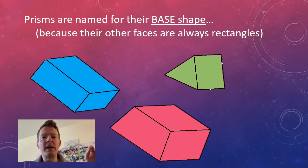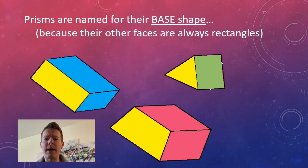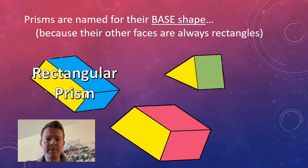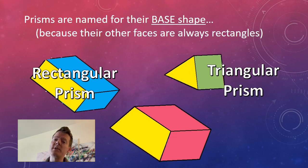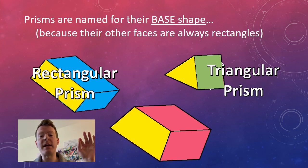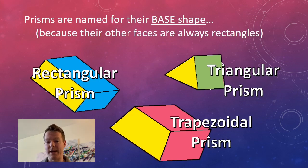Here are our three prisms, and they are named by those bases. Prisms are named for their base shape because all of the other faces of a prism are always going to be rectangles. So we have a rectangular prism, a triangular prism — two triangles connected with rectangles — and a trapezoidal prism, with two trapezoids connected with rectangles.